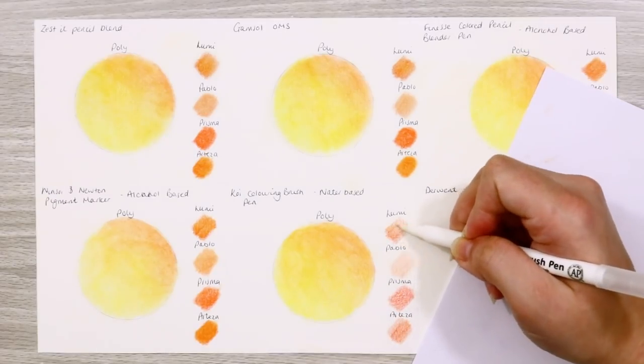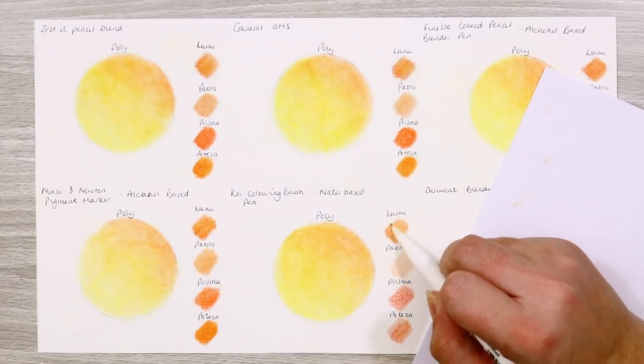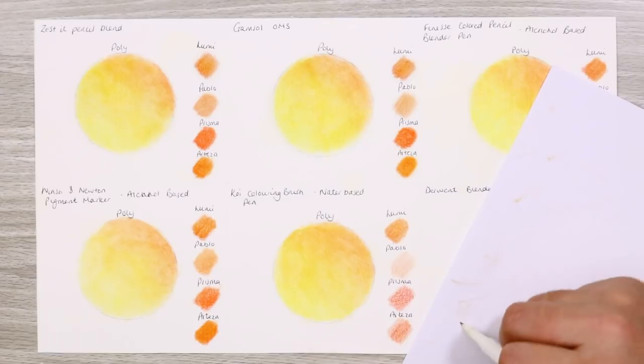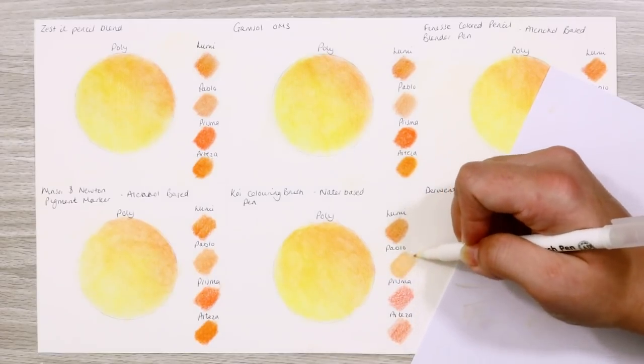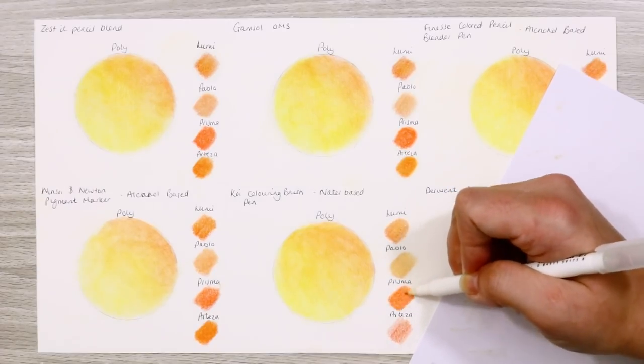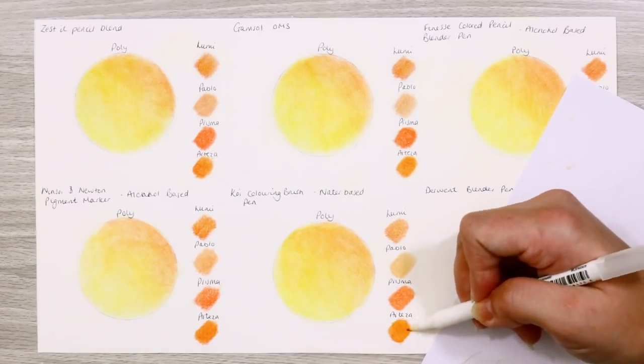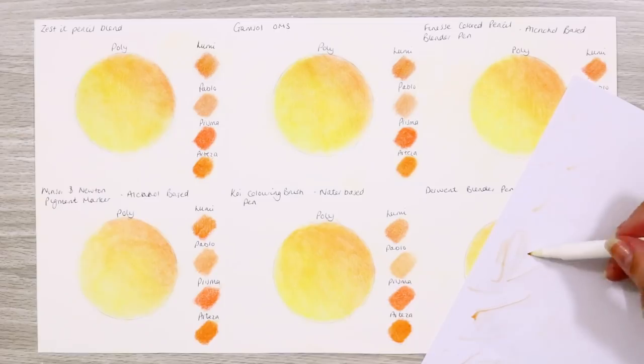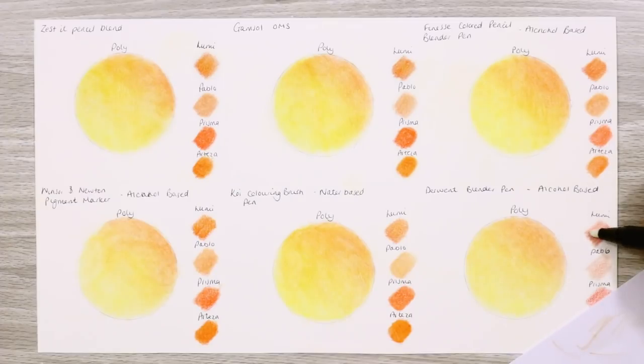The Koi coloring brush pen is the worst of the bunch unfortunately. Being water based, I knew it wouldn't dissolve that binder and push the pigments around as much as other methods, so layering over the top was actually quite tricky, especially with those wax based pencils. The only exception here being the Arteza pencils. For some reason this blended out the Arteza better than any of the other methods.